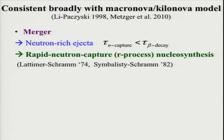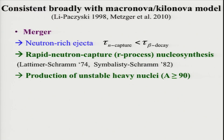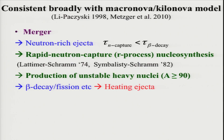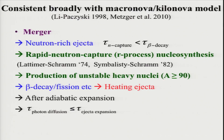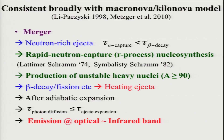In this scenario, very heavy neutron-rich elements are assumed to be synthesized. Because they are very neutron-rich, they are unstable against decay. By beta decay, fission, and so on, this ejecta is heated up. Initially, because the ejecta is very dense, photons cannot escape freely. As a result, released heat is consumed by adiabatic expansion. But eventually, if the density of the ejecta becomes sufficiently small, the photon diffusion timescale becomes shorter than the expansion timescale, and the ejecta starts shining. It is predicted that the ejecta shines in the optical to infrared band over one to ten days.